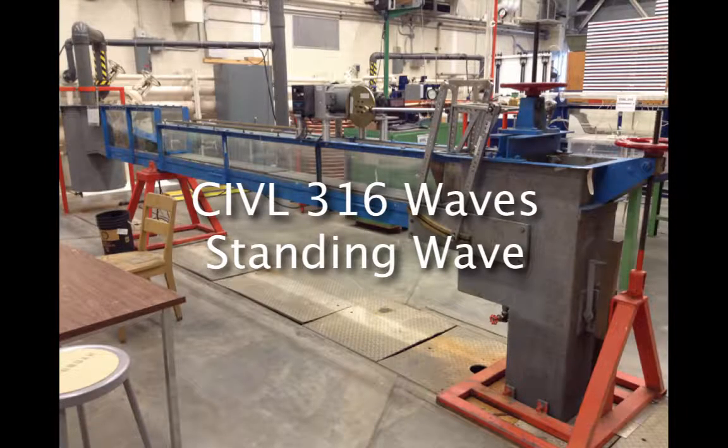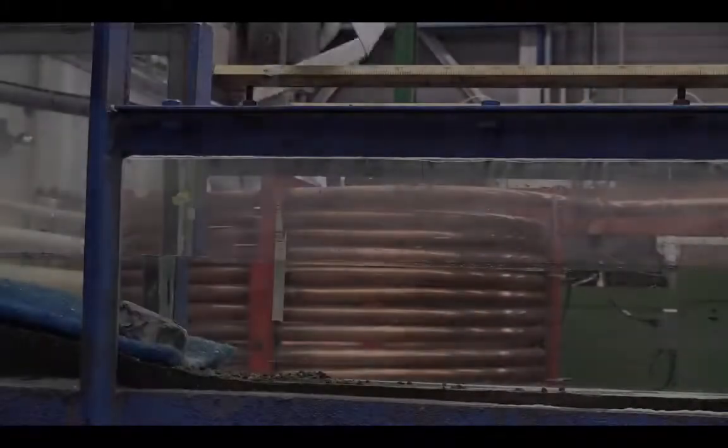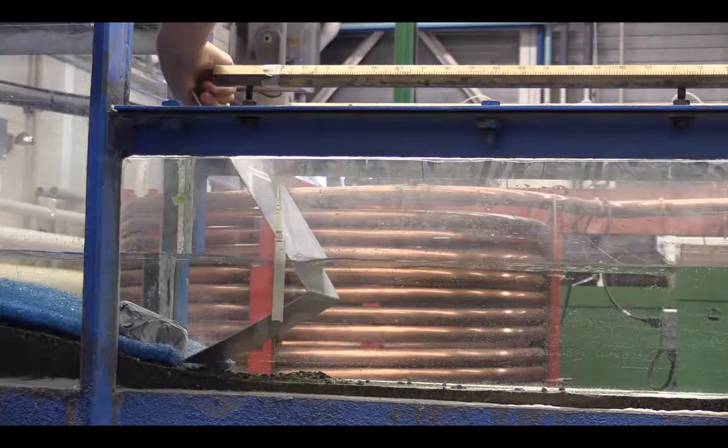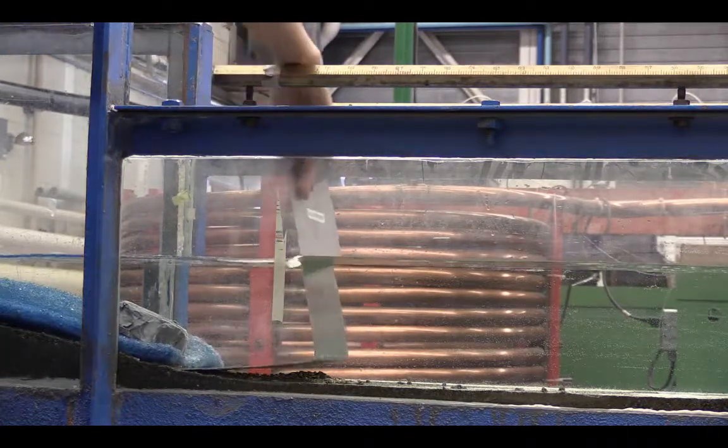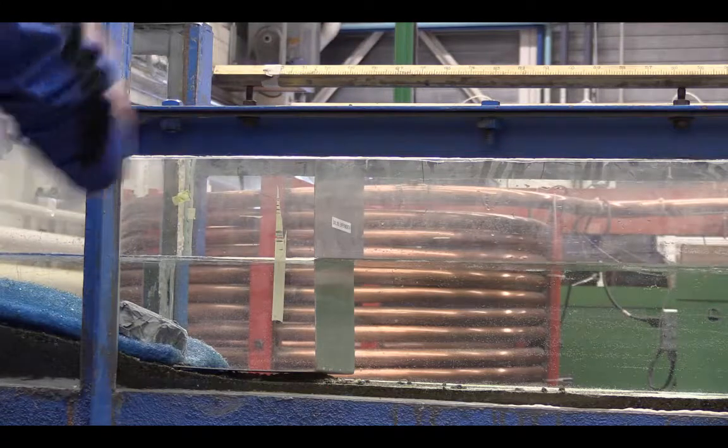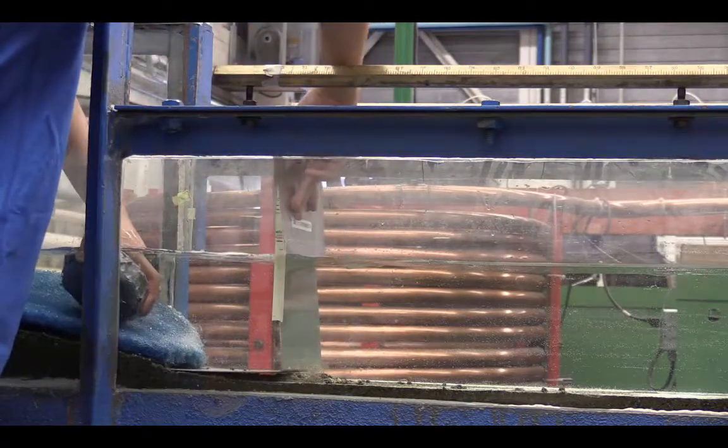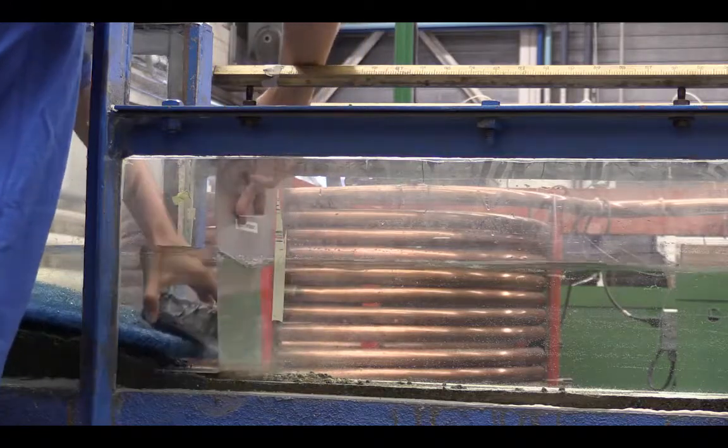This video demonstrates how to obtain standing waves. A metal plate is provided which can be fitted into the channel to act like a vertical seawall at the beach end of the flume. This plate will reflect the waves causing a standing wave train to form.